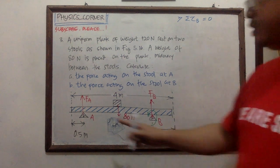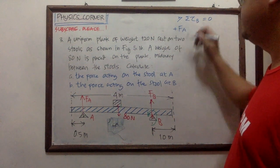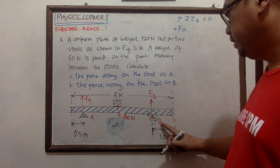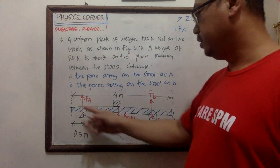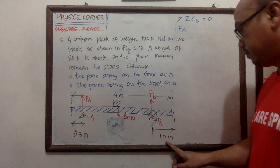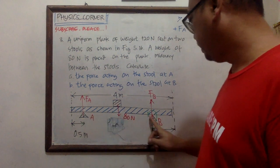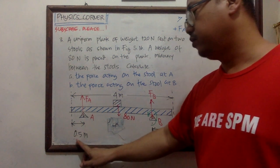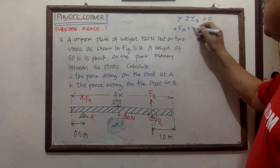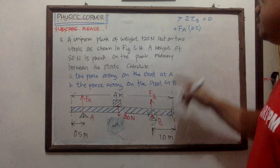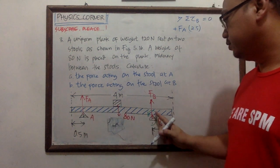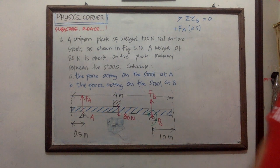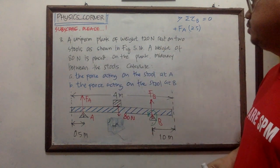Using total torque at point B equal to zero, we have positive FA times the distance from point A to point B. We know the plank is four meters, with stove A at 0.5 meters from one end and stove B at one meter from the other end, so the distance from A to B equals 4 minus 1 minus 0.5, which is 2.5 meters.